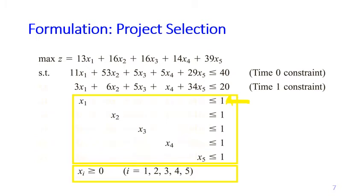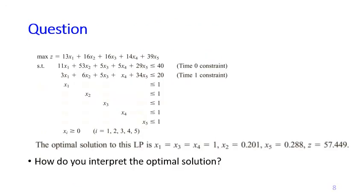Do not forget to add design restrictions, which means we cannot purchase a negative number of an investment. This is the complete formulation for the example of project selection in Star Oil Company. I will give you a question to check your understanding: given the formulation and the optimal solution, how do you interpret the optimal solution? I will give you the answer after you pause the video.